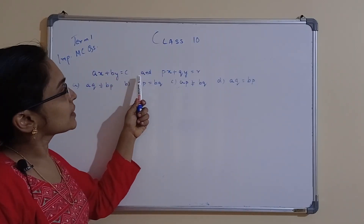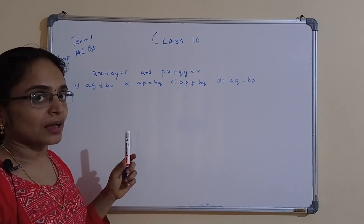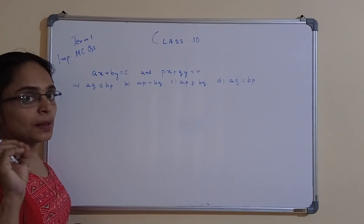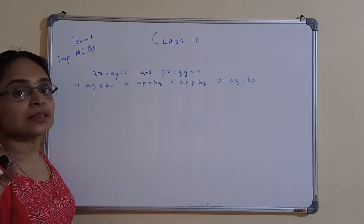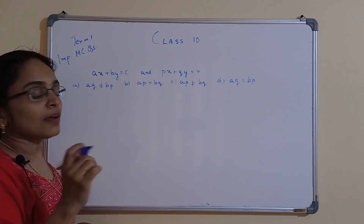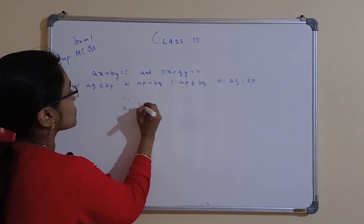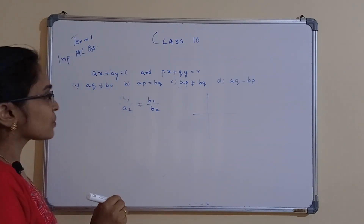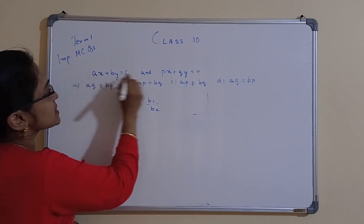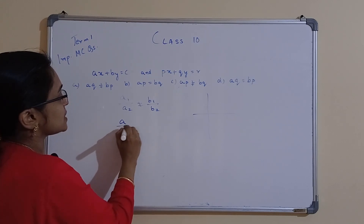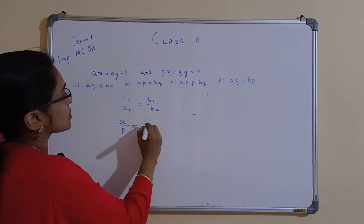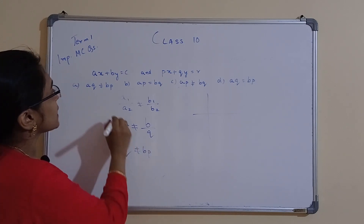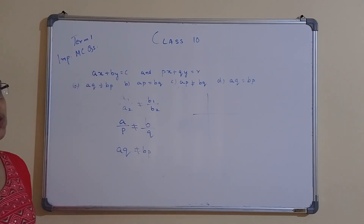Next: if ax + by = c and px + qy = r has a unique solution, which option is correct? For a unique solution the lines are intersecting, which means a1/a2 ≠ b1/b2. That is, a/p ≠ b/q. Cross multiplying gives aq ≠ bp. So option A, aq ≠ bp, is correct.